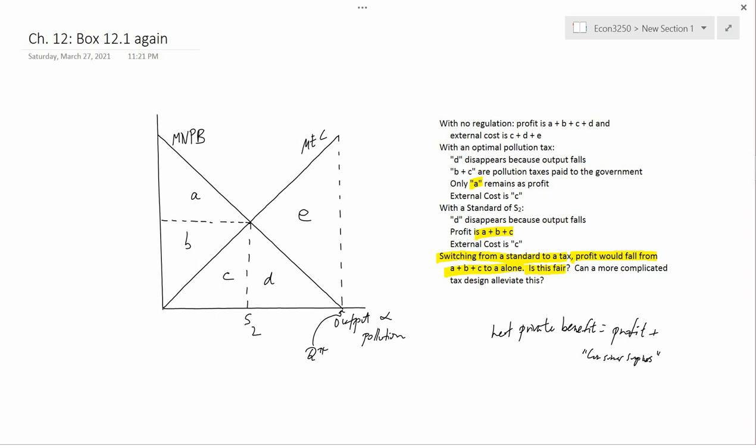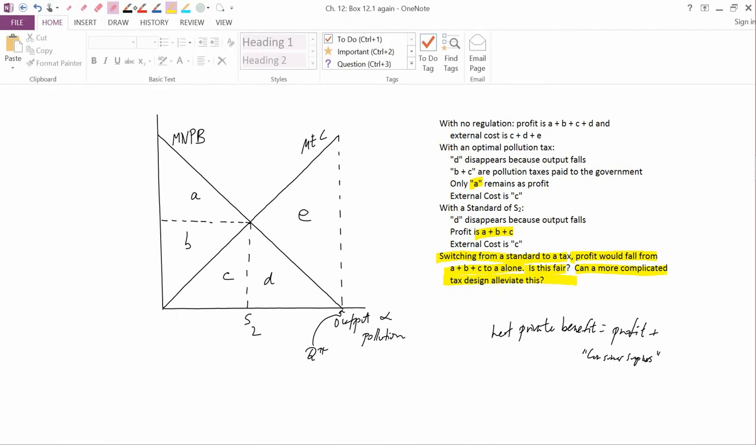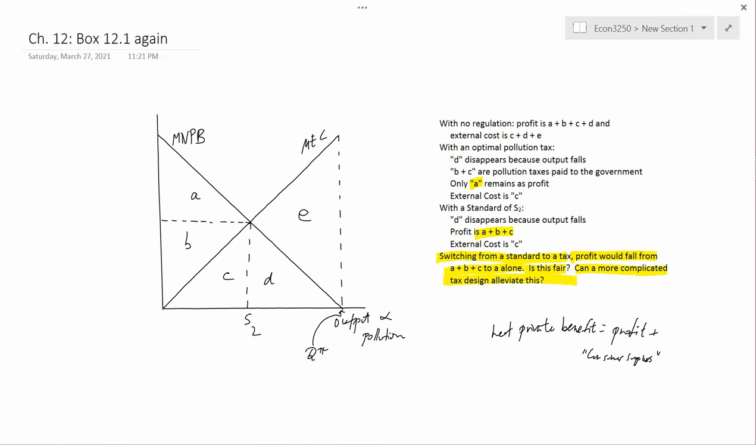That raises the question: can a more complicated tax design alleviate this? The implication of all the taxes we've been discussing so far is that they are what an economist would call linear. So you have a certain tax rate that's exactly the same for all levels of output.